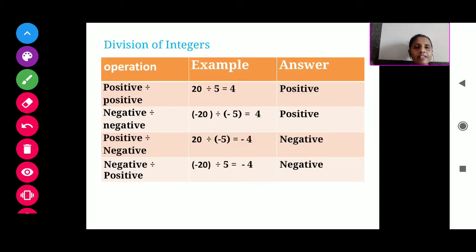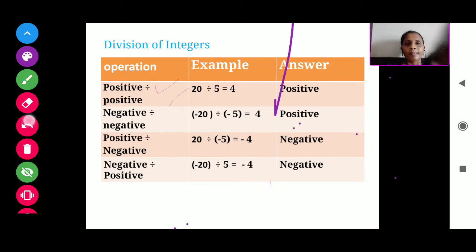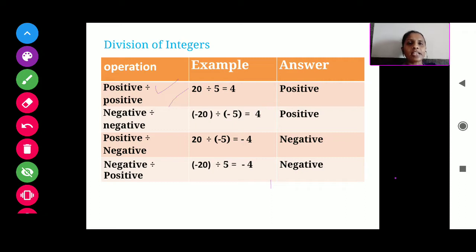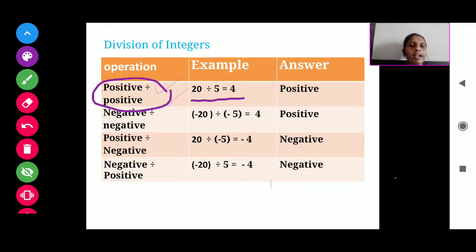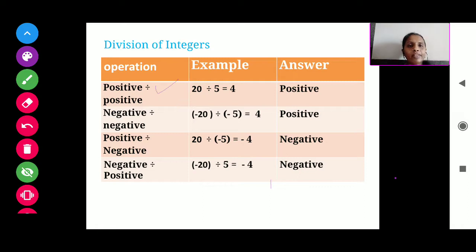In today's video lecture, we will first discuss the division of integers. Here you can see that the first one is positive divided by positive. When a positive integer is divided by a positive integer, our answer will always be positive. For example, 20 divided by 5, our answer will be 4, which is also a positive integer.